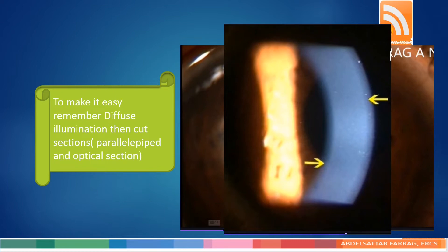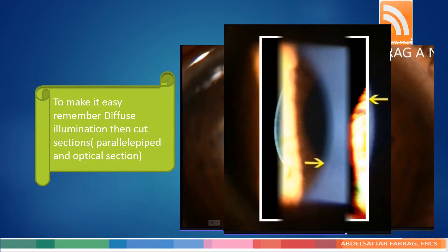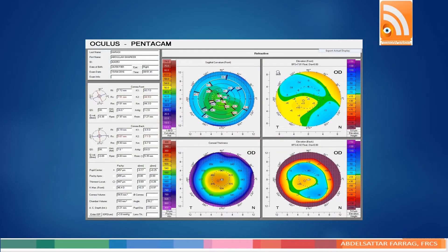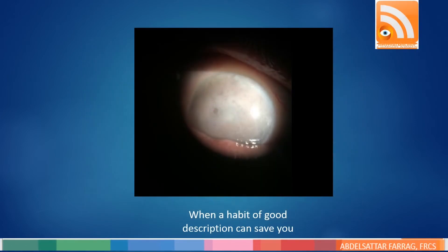To make it easier, remember to start with diffuse illumination, then use a cut section to comment on the anterior and posterior corneal surface, and then the optical section. When commenting on the cornea, think of the four maps in Pentacam: the curvature map gives an overview like diffuse illumination; the anterior and posterior elevation maps are like parallelepiped illumination; and the pachymetry map is more or less like the optical section.